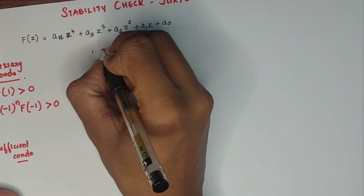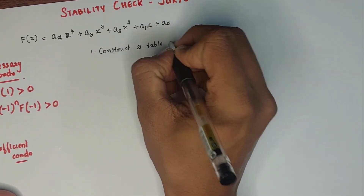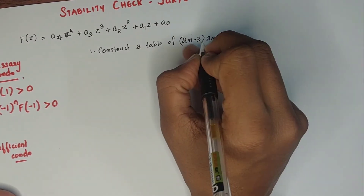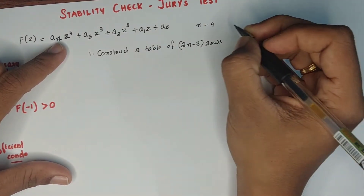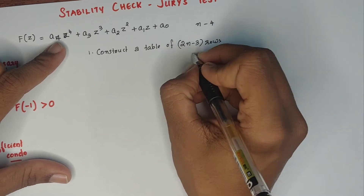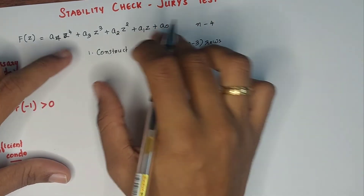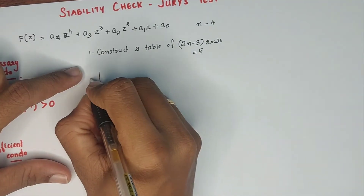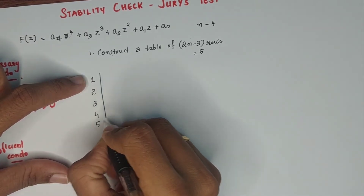First, construct a table of 2n−3 rows. Here the highest power of Z is 4, so n=4. That gives 2×4−3 = 5 rows. We will create a table with 5 rows: rows 1, 2, 3, 4, 5.